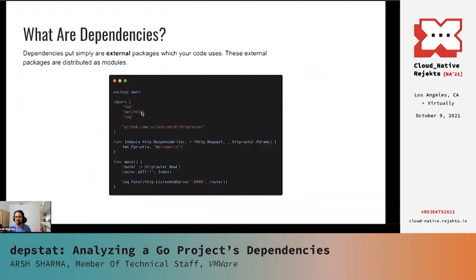First things first, what exactly are dependencies? Dependencies, put simply, are external packages which your code uses. These external packages are distributed as modules. As per the definition of a module in Go, it is nothing but a directory containing a collection of nested and related Go packages with a go.mod file at its root.